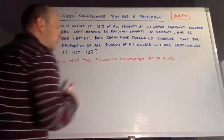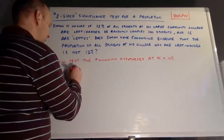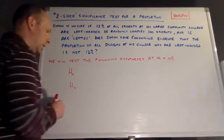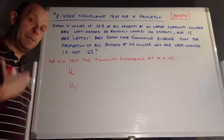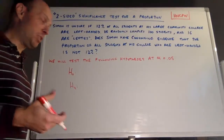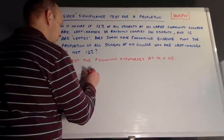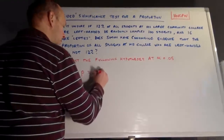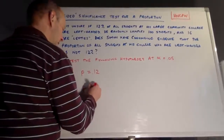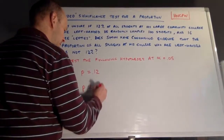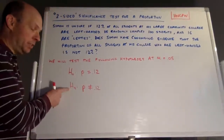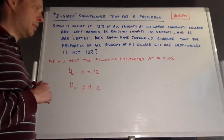We have a null hypothesis and an alternative hypothesis. Although Simon suspects it might be different than 12%, he's going to run the test under the assumption that it actually is 12%. So the null hypothesis is that P equals 0.12. And since this is a two-sided test, our alternative is P is not equal to 0.12. The mechanics of finding the P-value will be a little different because of this two-sided alternative.